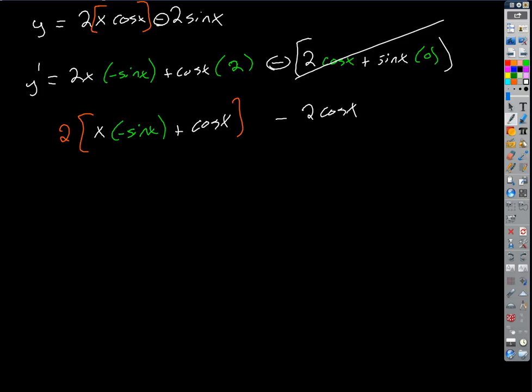So then that would have just looked like x times minus sine x plus cosine x, right? And then we just redistribute that 2 at the end. Okay? So what are we going to get for our final answer? Negative 2x. Yeah, good. The cosines, the 2 cosine x will cancel with the minus 2 cosine x. And so we just get the answer negative 2x sine x.